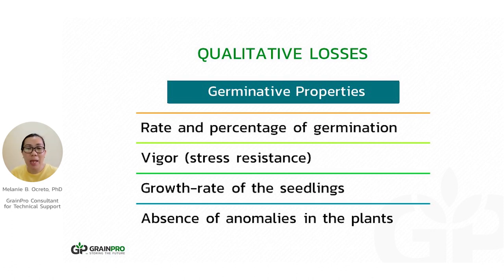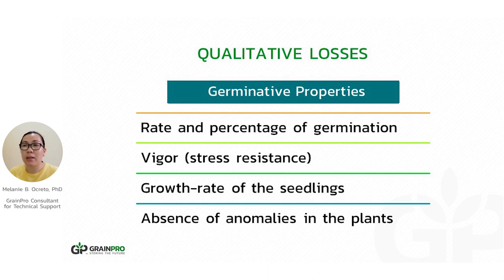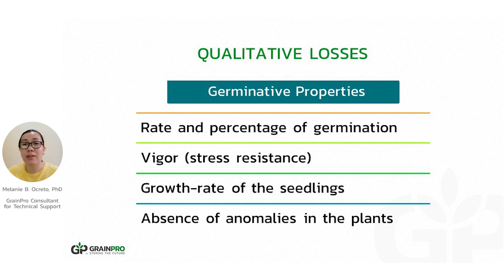With damage caused by insects and if it's moldy, the vigor of the seeds is also affected. For seeds, it's more sensitive than other commodities. They are very strict with storage and very careful not to allow insects and molds to grow in their seeds during storage, because there is a drastic effect on seed quality if these agents are present. The growth rate of seedlings is also affected because vigor is already reduced, leading to anomalies in the plants.